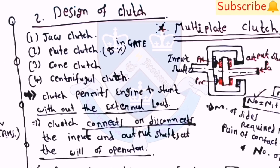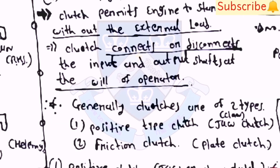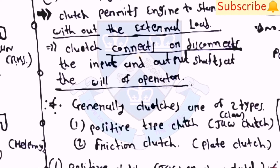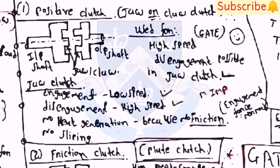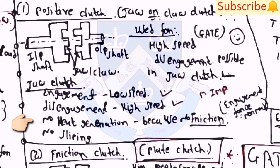Now coming towards design of clutch. There are four types: jaw clutch, plate clutch, cone clutch, and centrifugal clutch. The clutch permits the engine to start without external load and connects or disconnects input and output shafts at the will of the operator. Two main types: positive type clutch (jaw or claw clutch) and friction clutch (plate clutch). Jaw clutch is used for high-speed disengagement and also for engagement and disengagement at low and high speeds with no heat generation due to no friction and no slipping.